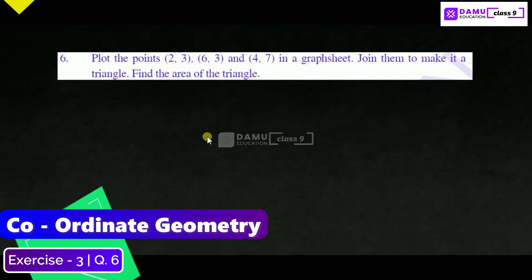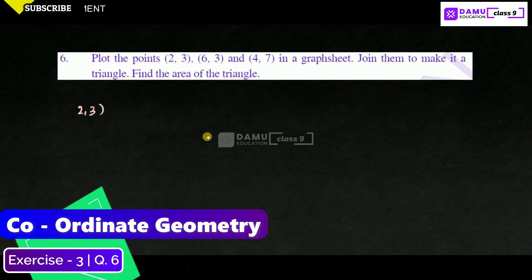In this module we are going to discuss our sixth problem: plot the points (2,3), (6,3), and (4,7) on a graph sheet, join them to make a triangle, and find the area of the triangle. The given coordinates are (2,3), (6,3), and (4,7).